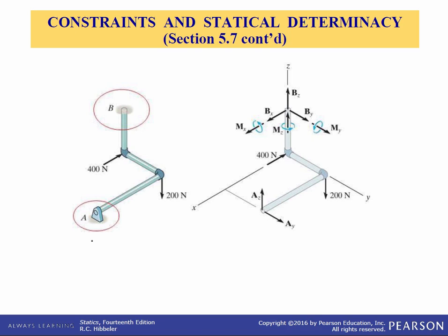Here we have a journal bearing at A and a fixed support at B. There are six unknowns at B and two unknowns at A, so we cannot solve this problem. If you take away the support at A, the pipe will tend to stay in the same place neglecting its weight, so the constraint at A is redundant.